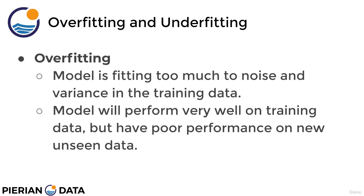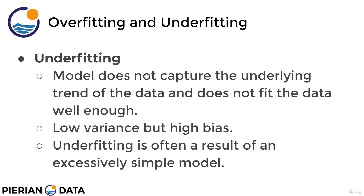Again, overfitting is when the model is fitting too much to the noise and variance in the training data — this is where you have a high variance model. The model will perform very well on the training data but have poor performance on new unseen data. The opposite of overfitting is underfitting, when you have too much bias. In underfitting, the model does not capture the underlying trend of the data well enough and does not fit the training data. So we have low variance but high bias.